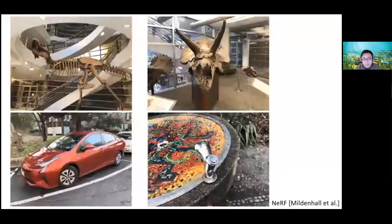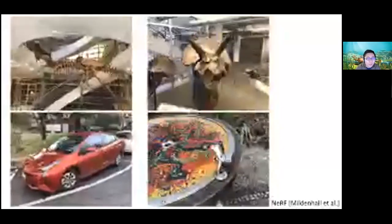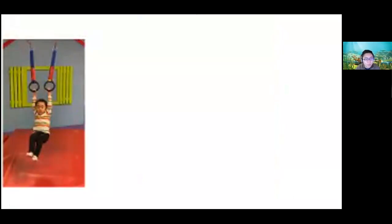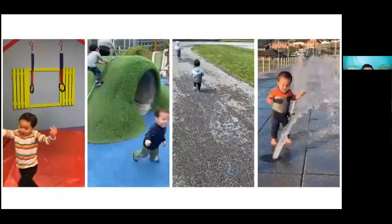This is all great, but when I look at my cell phone, I found that I have never captured multi-view images of a static scene or a video of static things. Instead, my videos look like this — these are all my kids. They are moving around in the park, chasing each other, cameras are moving, and a lot of things are moving in the scene.